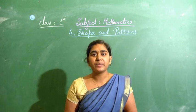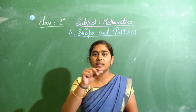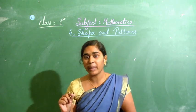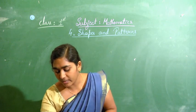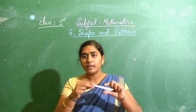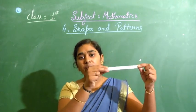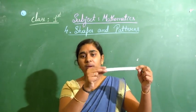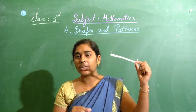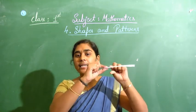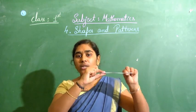Flat shapes means very thin — it will be like a piece of paper, a flat shape like this. It is very thin, no thickness is there.